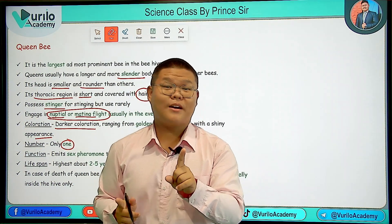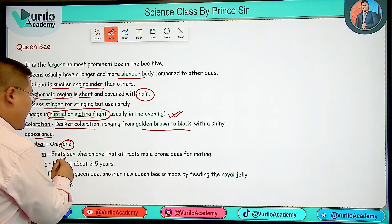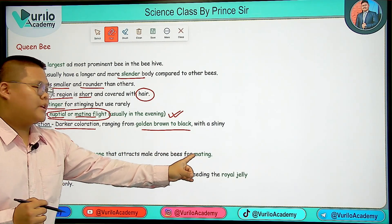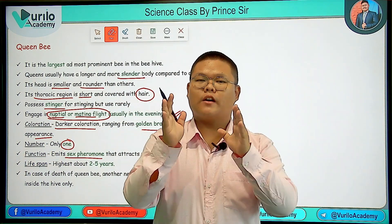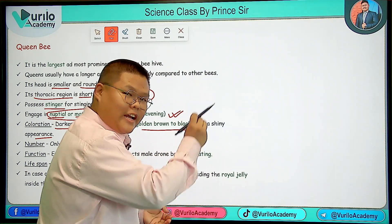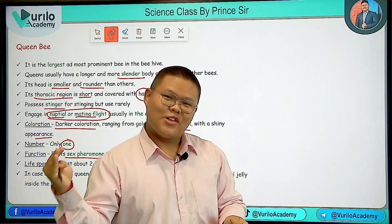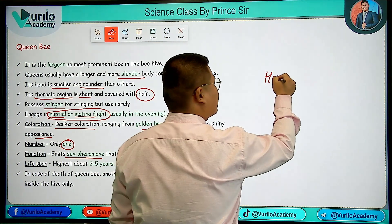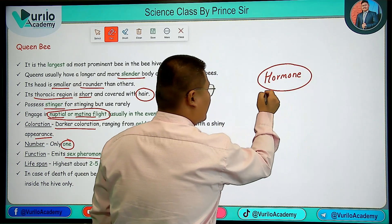The Queen Bee emits a sex pheromone that attracts male Drone Bees for mating. Remember, when studying hormones in insects, the production is called a pheromone — specifically a sex pheromone in this case.